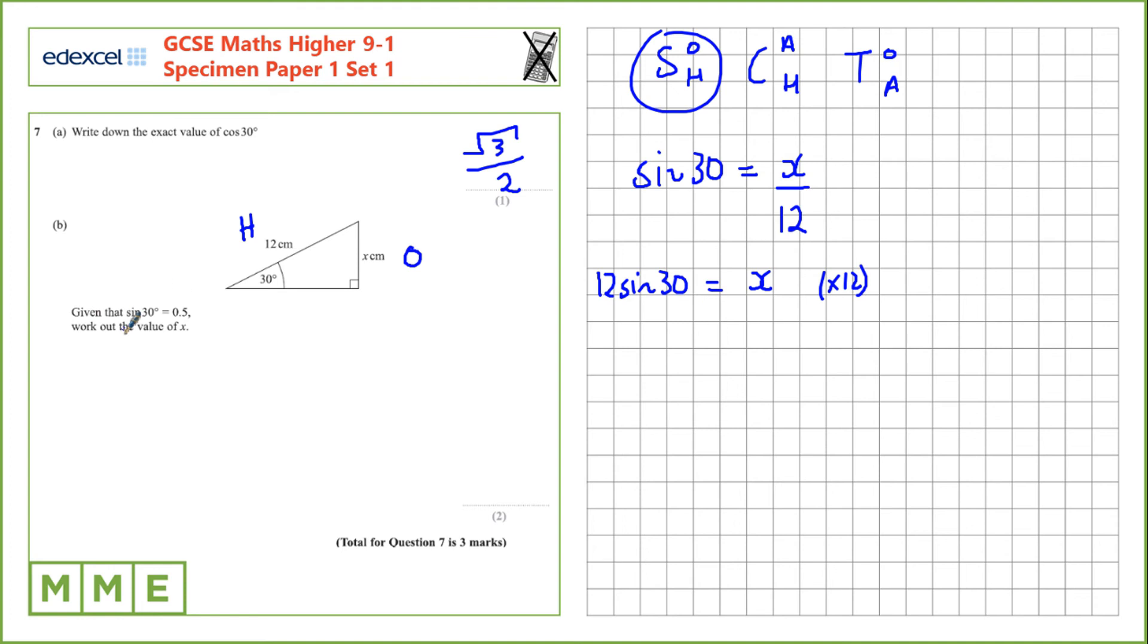We can now substitute. Instead of writing sine 30 we'll write 0.5. So x is 12 times 0.5 which equals 6.